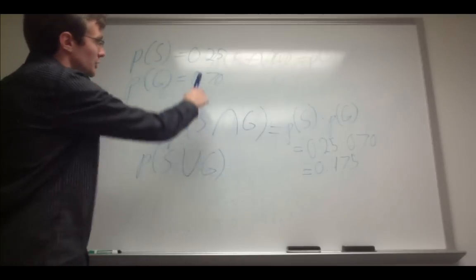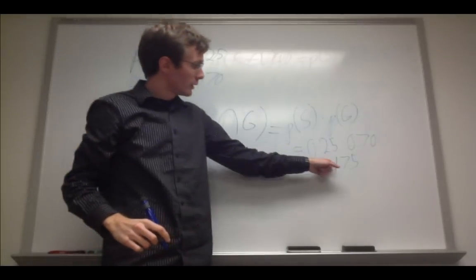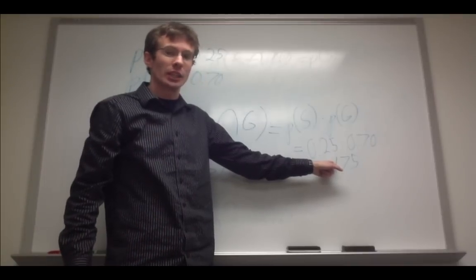And the formula for that is the sum of these two probabilities independently, and we subtract the intersection of the two.